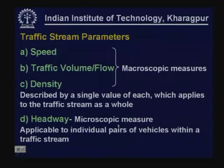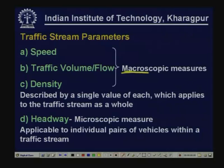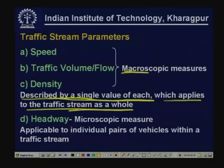There are three macroscopic measures of traffic stream parameters. 'Macroscopic' means described by a single value for the traffic stream as a whole. The macroscopic measures are speed, traffic volume or flow, and density. For the whole traffic stream we define a single value of flow and a single value of density.